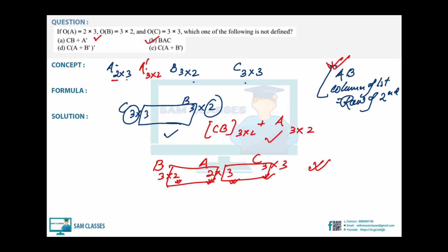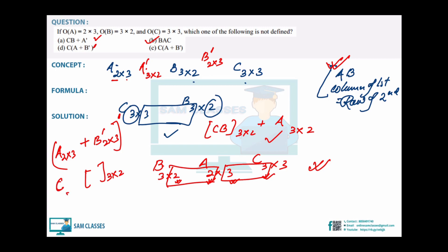Third option: (A + B-transpose) whole transpose times C. B-transpose is 2×3, A is 2×3, so A + B-transpose is defined — result is 2×3. Taking the whole transpose gives 3×2. Then multiplying with C (3×3): column of first (2) ≠ row of second (3)... wait — 3×2 times 3×3: column of first (2) ≠ row of second (3)... actually column of 3×2 is 2, row of 3×3 is 3. So this is also possible since 3 = 3. Third option is also correct.